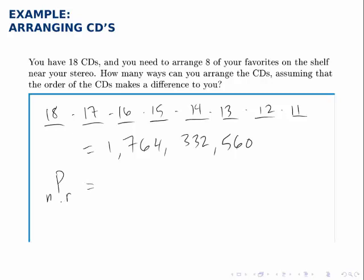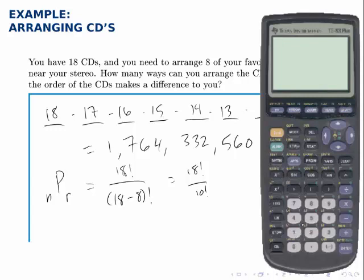So that would be 18 factorial divided by 18 minus 8, or (n minus r) factorial. Or 18 factorial divided by 10 factorial. And if you pull up the calculator and type in 18 and then go to the math menu, scroll over to the probability menu and down to number 4 for the factorial.